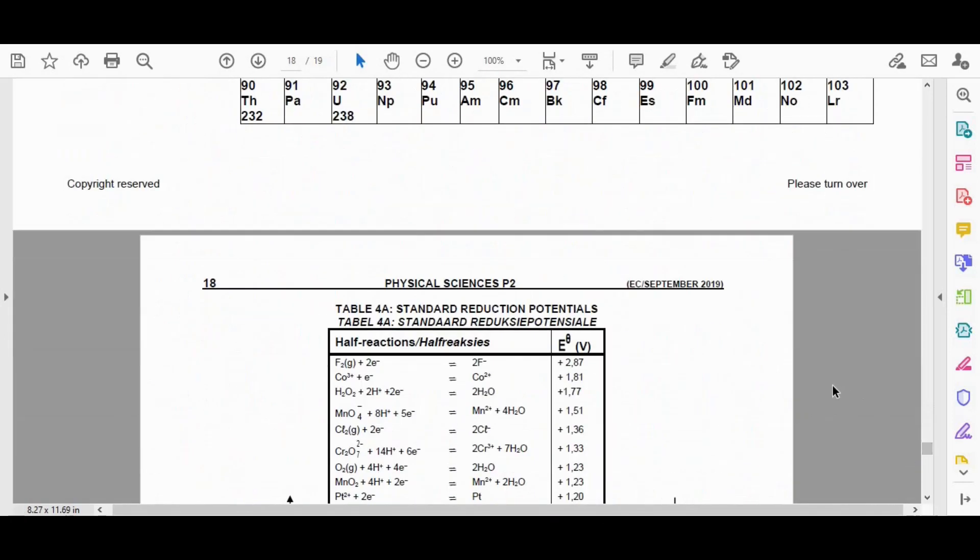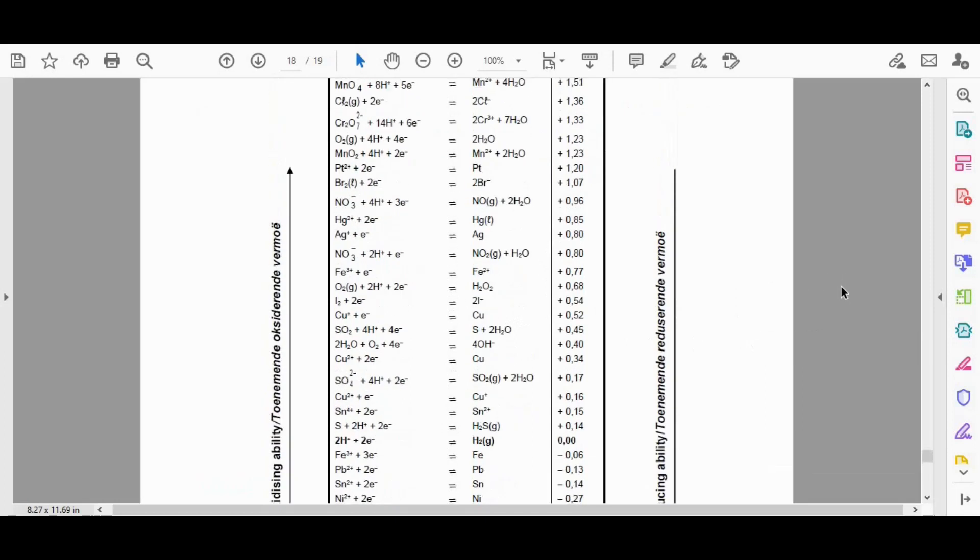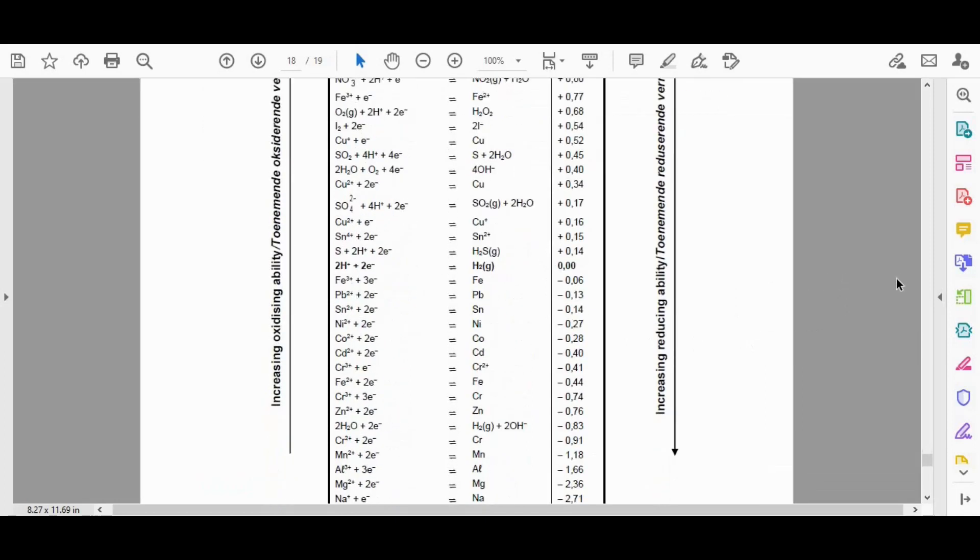I like to use table 4A, you can either use 4A or 4B. And if I find platinum over here, Pt, I see it has a cell potential value of positive 1.20. I apologize for that.